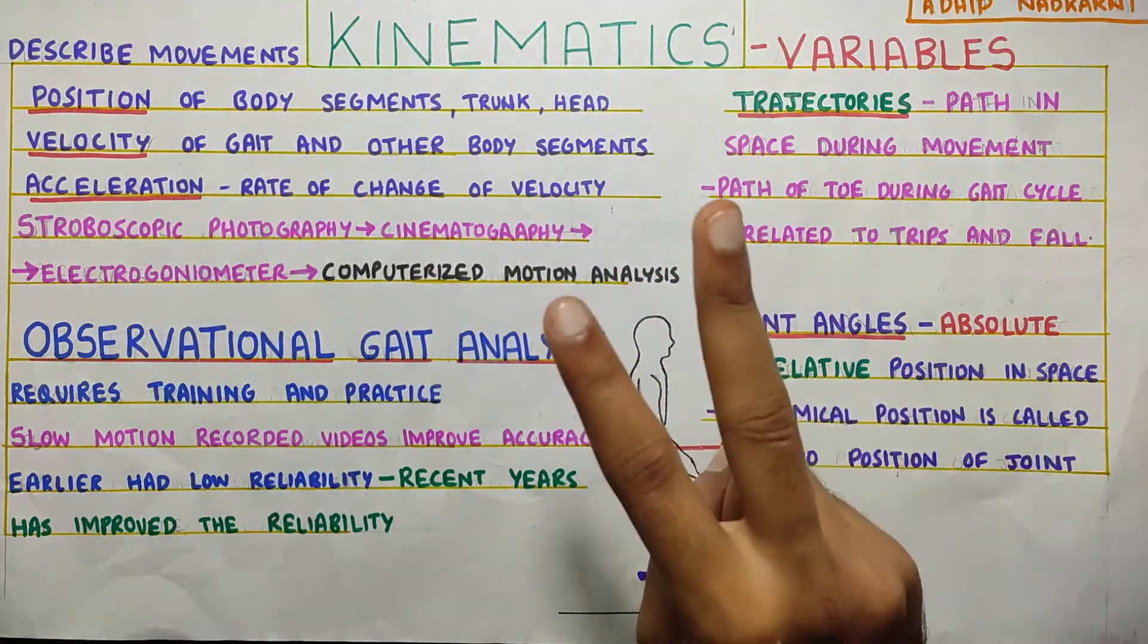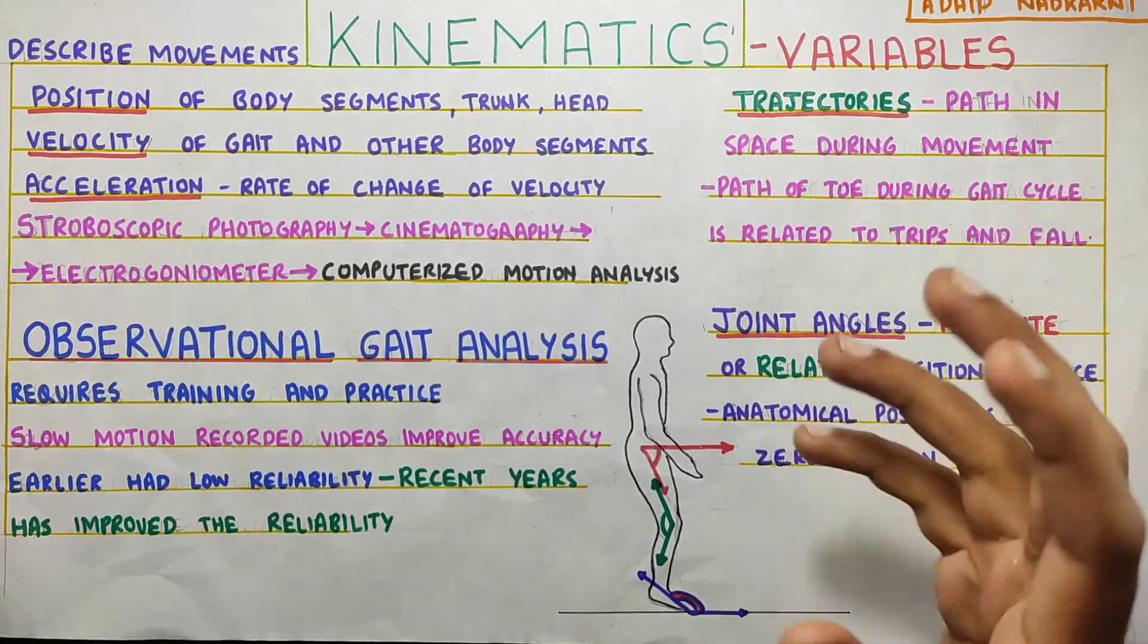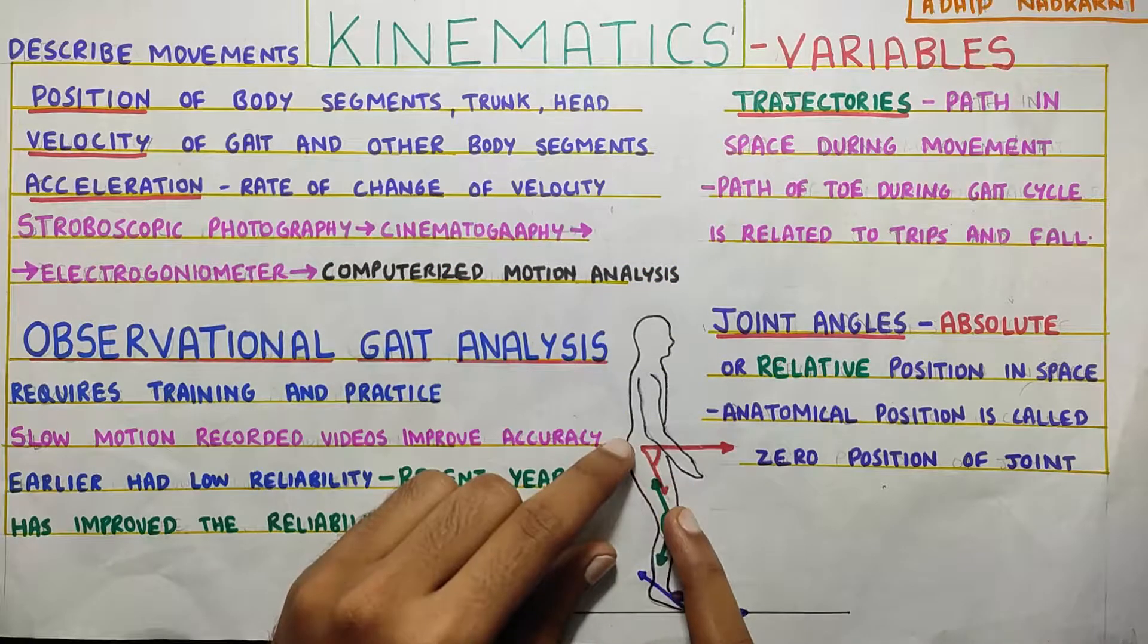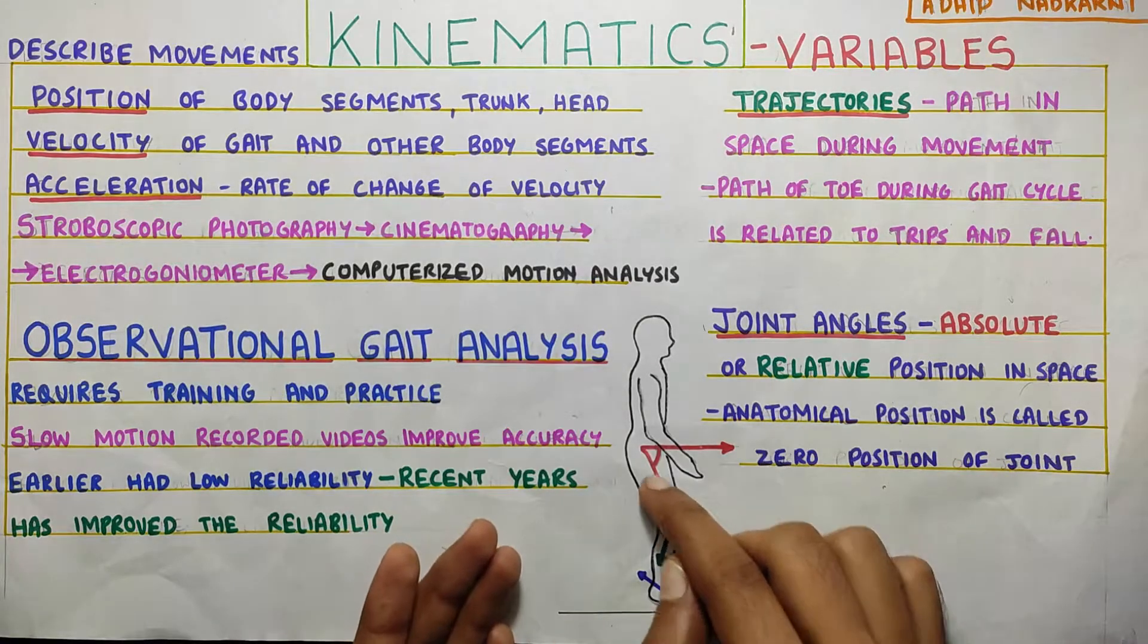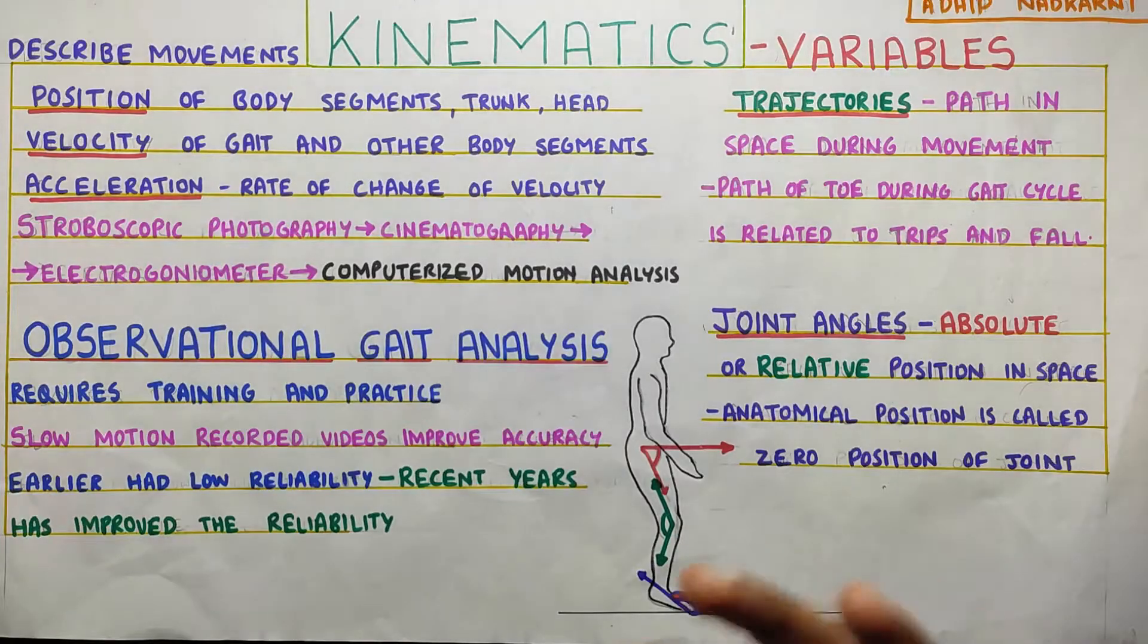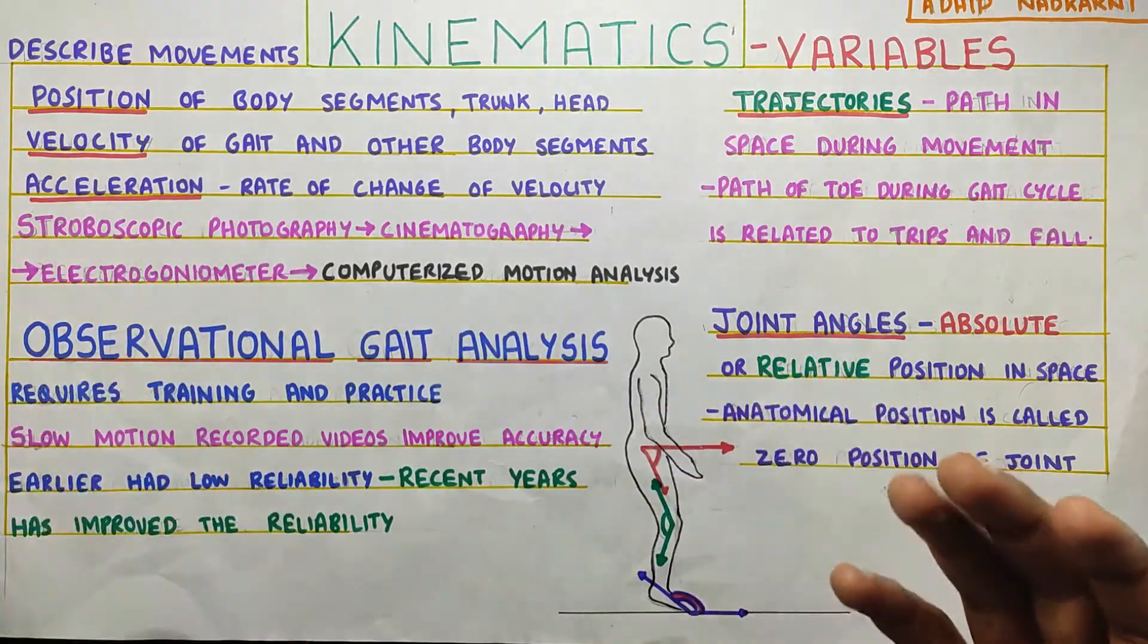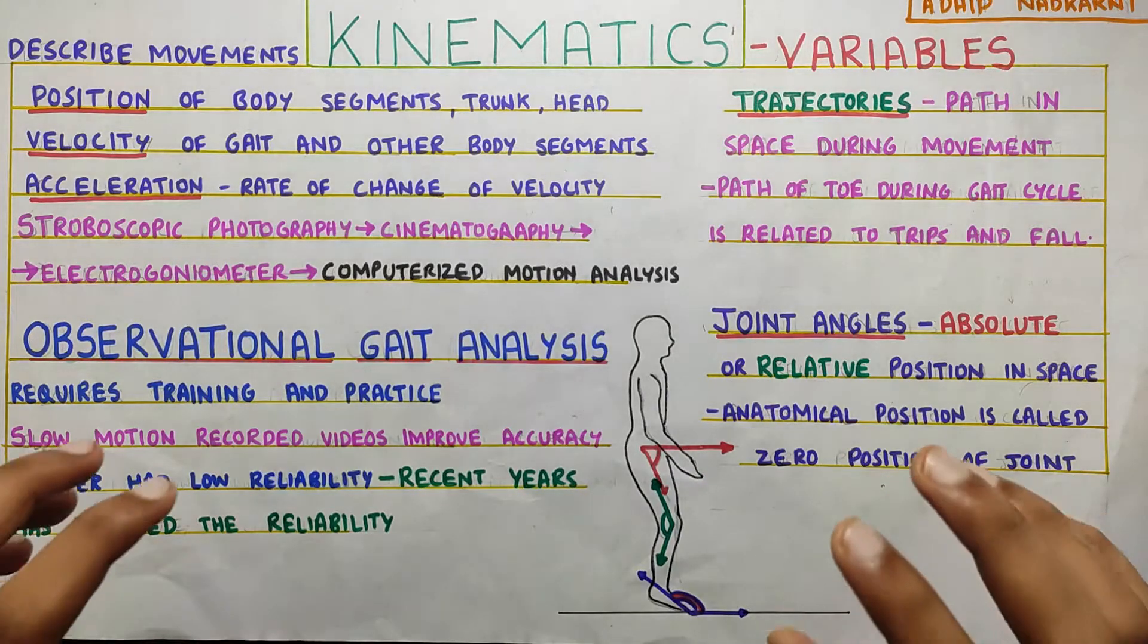Now, joint angles can be checked in two ways. There is the absolute and then there is the relative joint angle. Absolute is basically you take a line parallel to the ground and then from there you check the hip angle. And the relative is pretty simple. It is basically between the two segments that we use normally. So these are the two ways you can check the joint angle. The anatomical position that we know that is also called as the zero position of joint in the gait analysis.